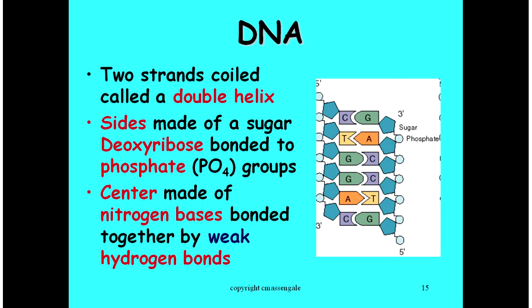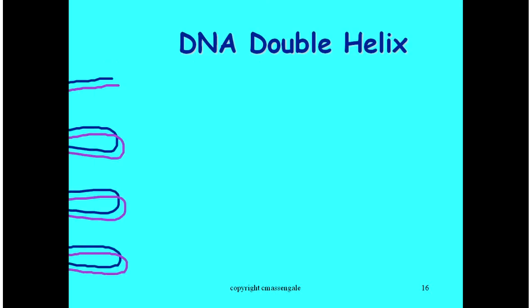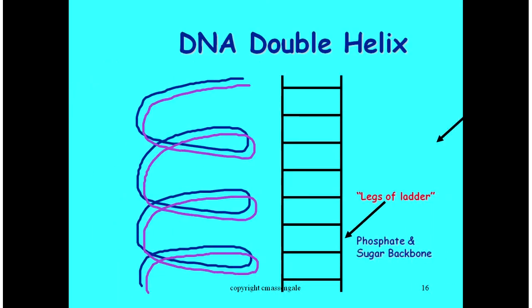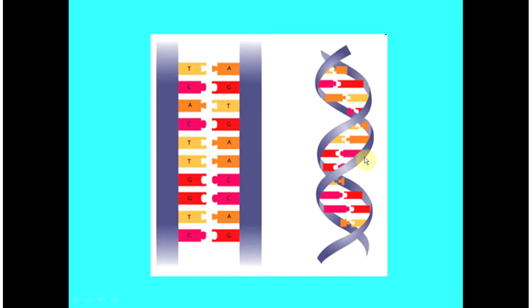You actually have to be able to unzip or separate the two DNA strands in order to make a copy of the DNA molecule before cell division. These are a couple other ways of viewing the DNA double helix. Here we have the strands wrapping around each other, and here we have it unwound, with our rungs of the ladder being our nitrogen bases, and the sides of the ladder being alternating phosphates and sugars.